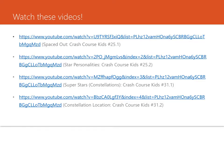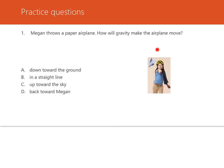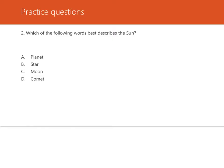Practice question one: Megan throws a paper airplane — how will gravity make the airplane move? The earth's gravity pulls everything on earth down toward the center of the earth, acting on all objects even if they aren't touching the surface. So gravity will pull the airplane down toward the ground after Megan throws it — the answer is A. Question two: which word best describes the sun — planet, star, moon, or comet? The sun is one of many stars and appears much brighter than other stars because it is much closer to the earth, so the answer is B.